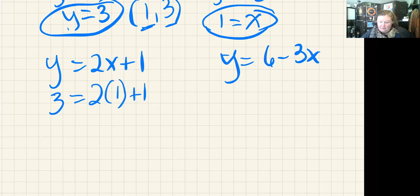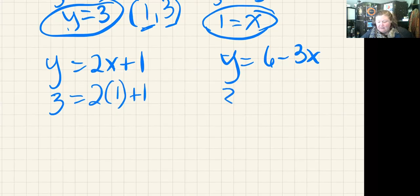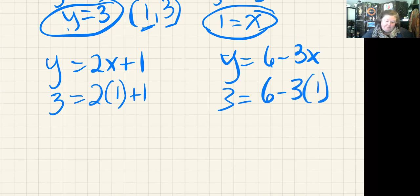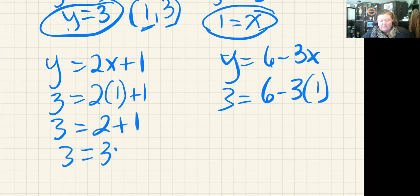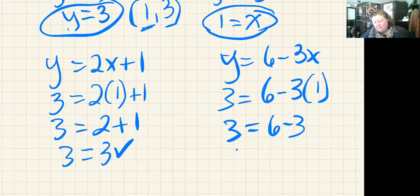And over here, 3 = 6 - 3(1). 3 = 2 + 1, which is 3. That checks. 3 = 6 - 3. And that checks.